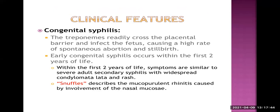Another type is congenital syphilis, which occurs because of vertical transmission. Treponema readily crosses the placenta and infects the fetus. If infection occurs in the first trimester or early second trimester, it can cause spontaneous abortion. If it occurs later, it can lead to stillbirth — the birth of a dead baby.